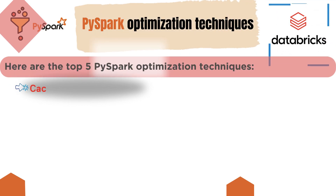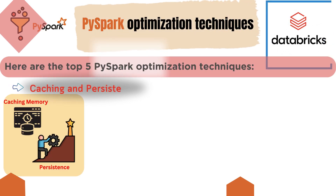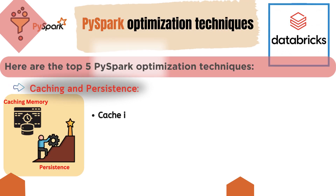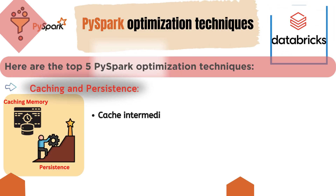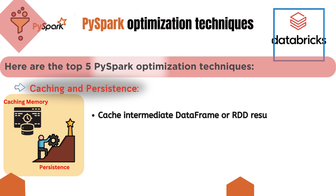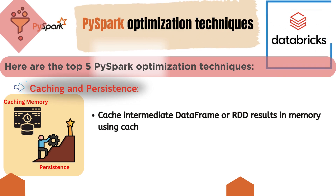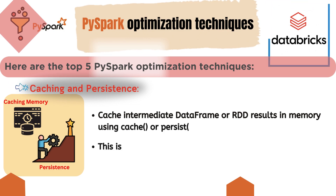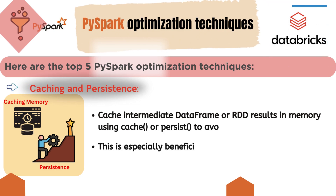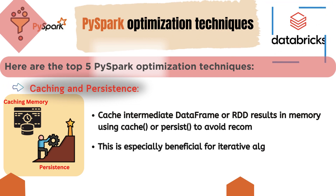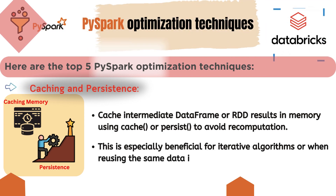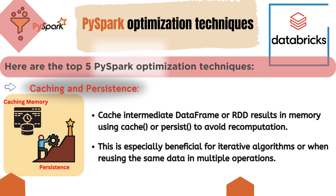Second, caching and persistence. Cache intermediate DataFrame or RDD results in memory using the cache function or persist function to avoid recomputation. This is especially beneficial for iterative algorithms or when reusing the same data in multiple operations.